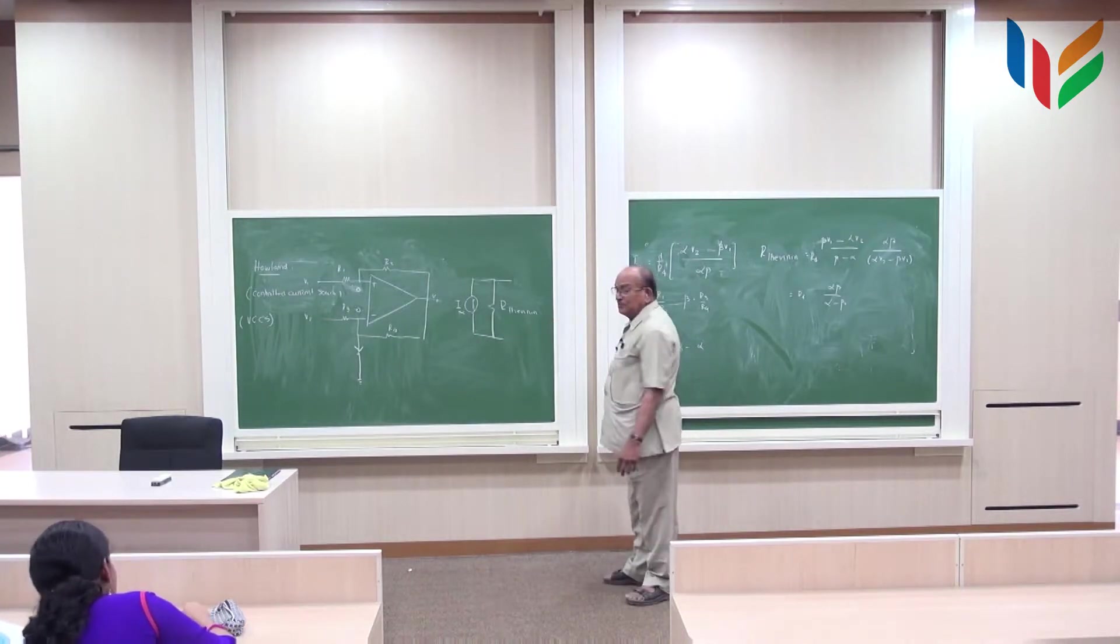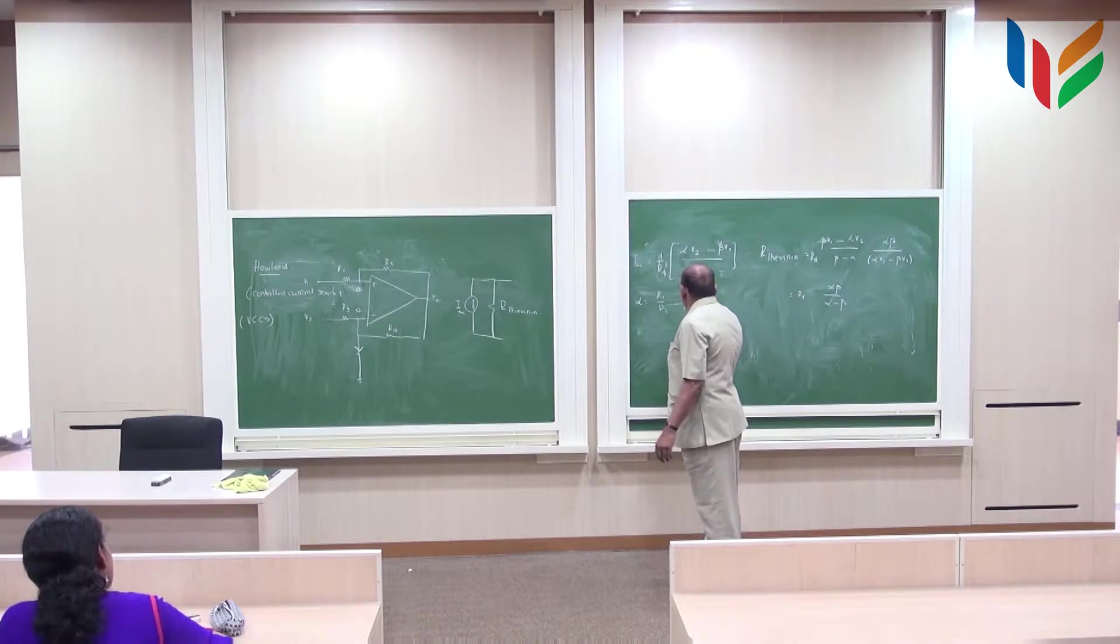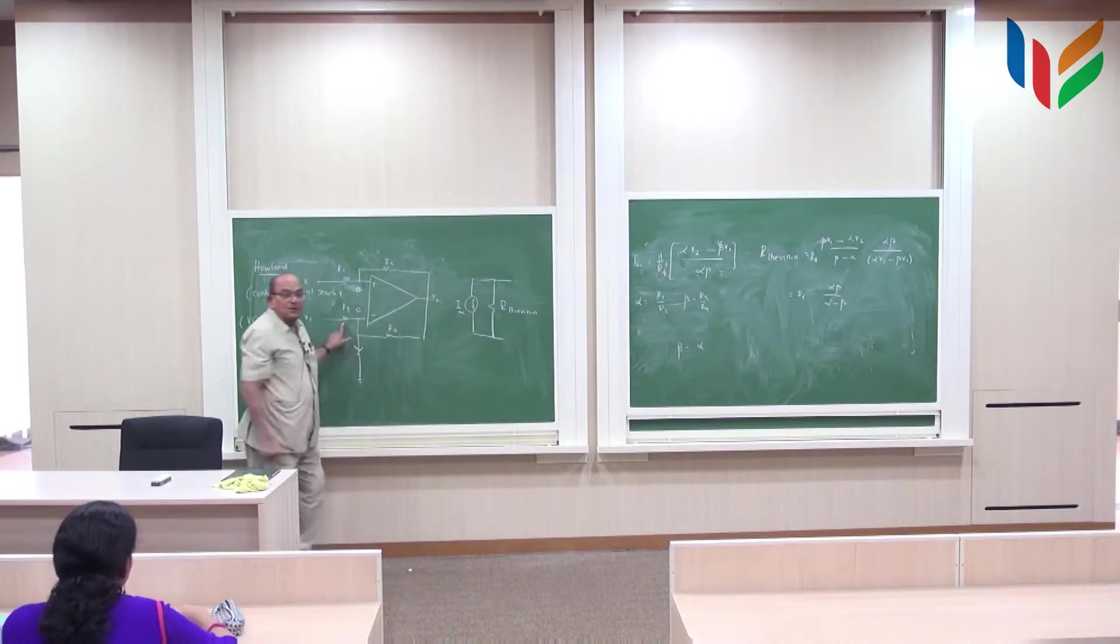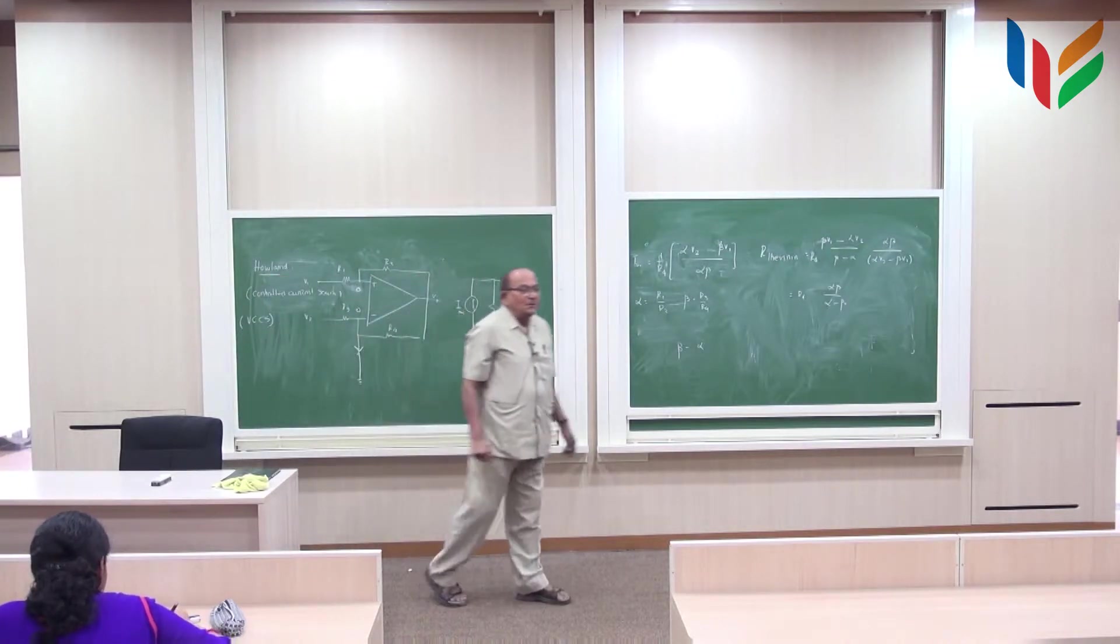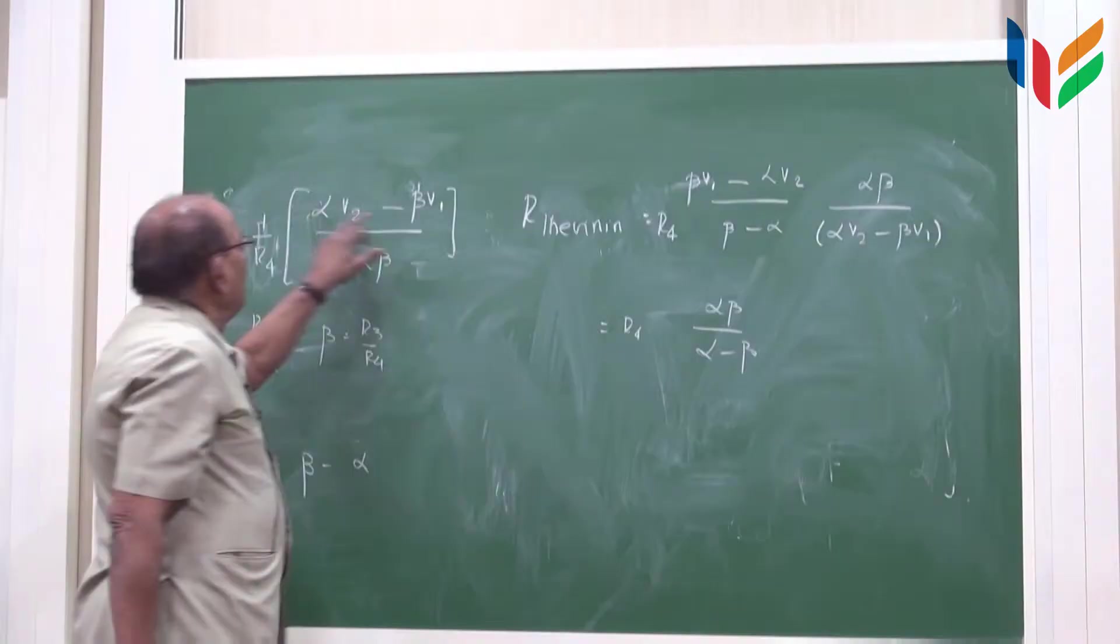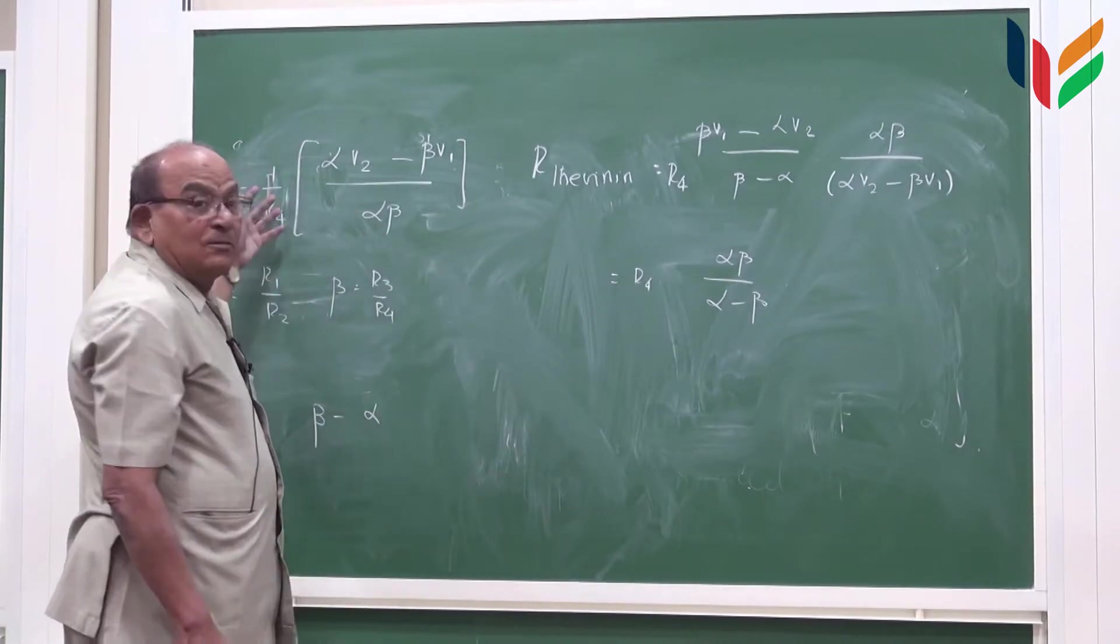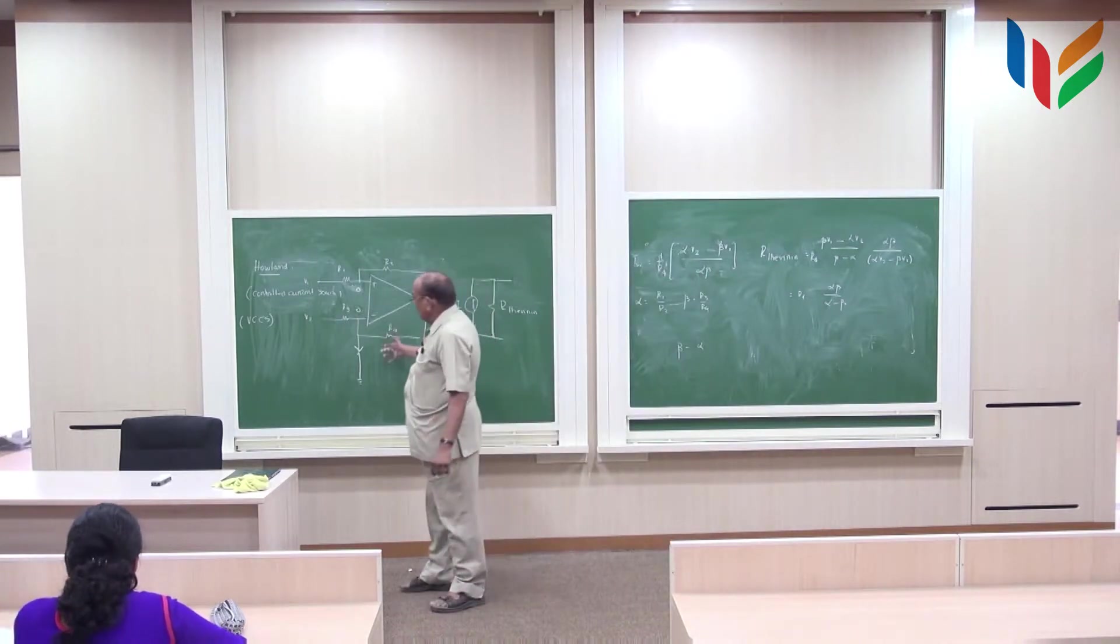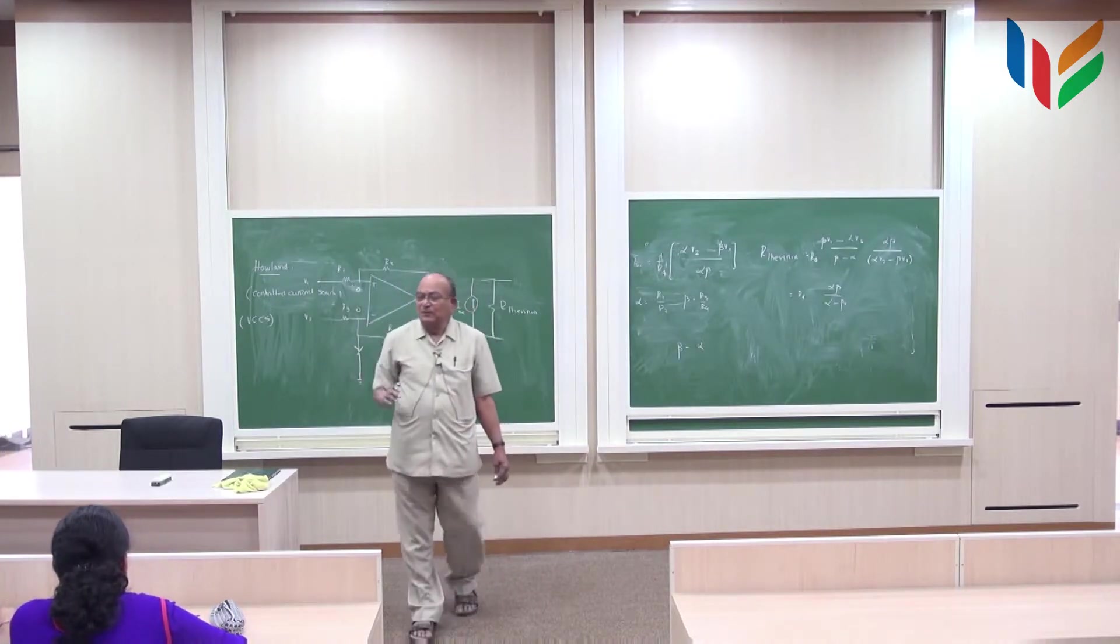What does alpha equals beta mean? R1 by R2 must be equal to R3 by R4, or R1 R4 must be equal to R2 R3. If you can make the resistors satisfy this relation, I am able to get an ideal current source with a value equal to V2 minus V1 divided by R4. So I am able to convert two voltages V1 and V2 to a controlled current source whose value is proportional to the difference between V1 and V2.